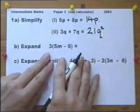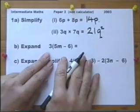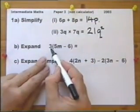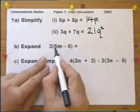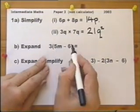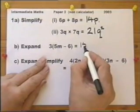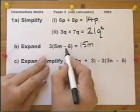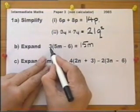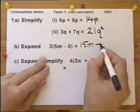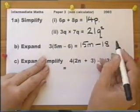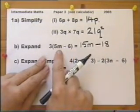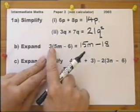Expand means remove the brackets. When you want to remove the brackets, you multiply whatever's inside the bracket by whatever's outside the bracket. So I multiply the 3 by the 5m: 3 times 5 is 15, so 3 times 5m is 15m. Then I multiply the minus 6 by the 3: 3 multiplied by minus 6 is minus 18. So a number outside the bracket tells you to multiply everything inside the bracket by that number.